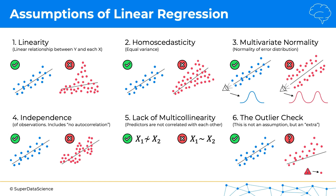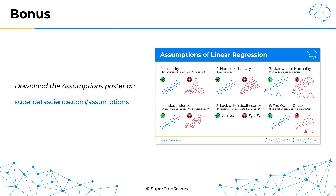And to finish off this tutorial, I have a special bonus for you. If you enjoyed this explanation, you can download the PDF version of this slide and keep it at home, print it out as a poster, and keep it somewhere handy for those times when you need to check the assumptions of linear regression. If that's something you'd like to have, head on over to superdatascience.com and you can download your poster there. And if you'd like to see more tutorials like this, hit the like button and subscribe, and I'll see you next time. Until then, enjoy machine learning.